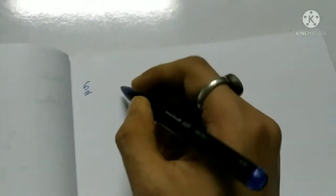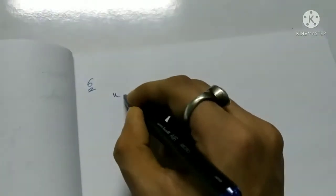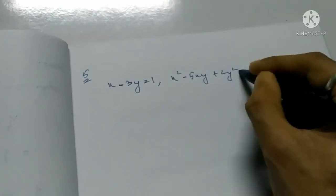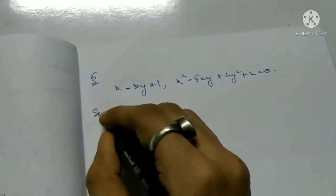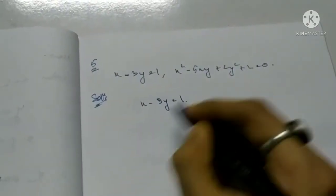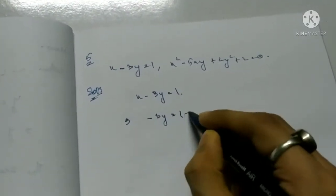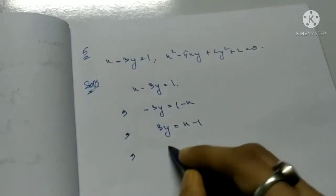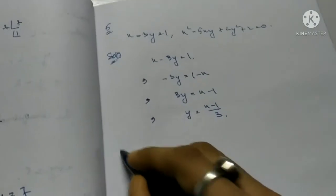Question number 4: x minus 3y equals 1 and x squared minus 5xy plus 2y squared plus 2 equals 0. From equation 1: x minus 3y equals 1, so 3y equals x minus 1, giving y equals (x minus 1)/3. This is equation 1.